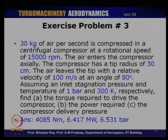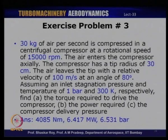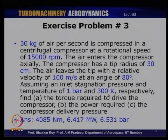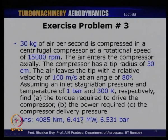Exercise Problem 3: 30 kg/s of air is compressed in a centrifugal compressor at 15,000 RPM. Air enters axially; tip radius is 30 cm. Air leaves the tip with relative velocity 100 m/s at 80 degrees. Inlet stagnation conditions: 1 bar and 300 K. Find torque (4085 N·m), power required (6.417 MW), and compressor delivery pressure (6.531 bar).